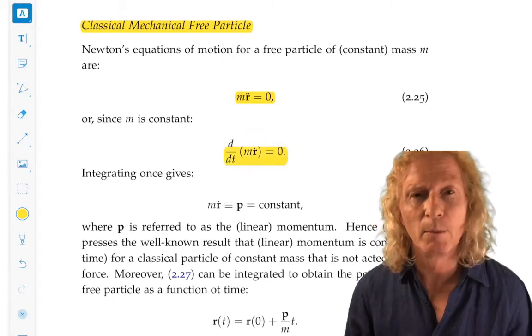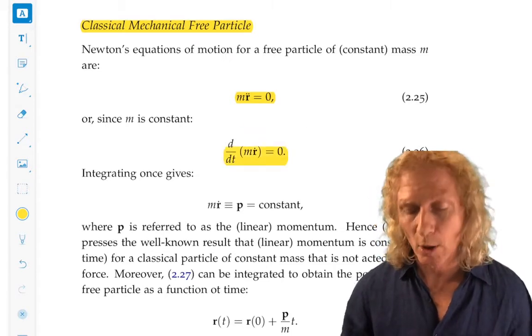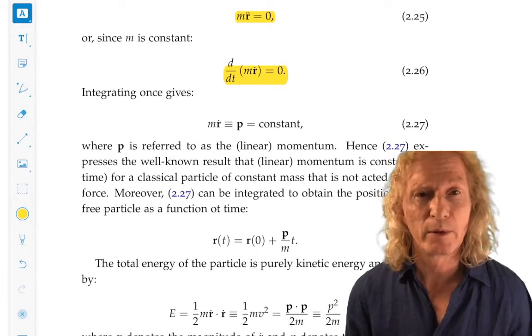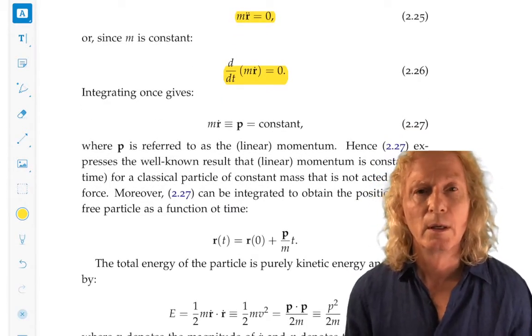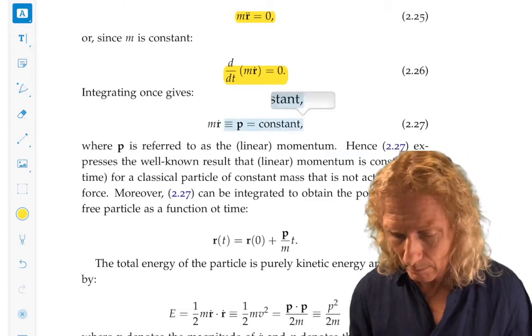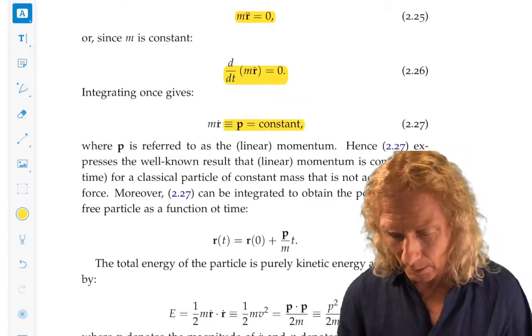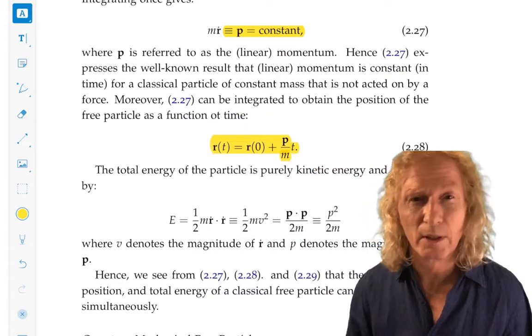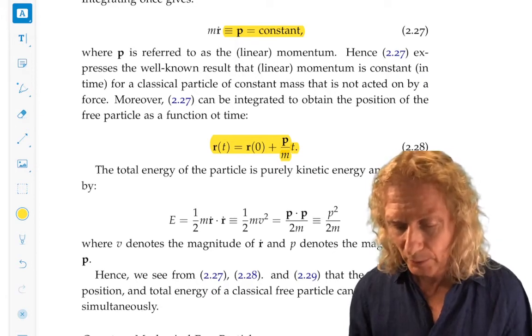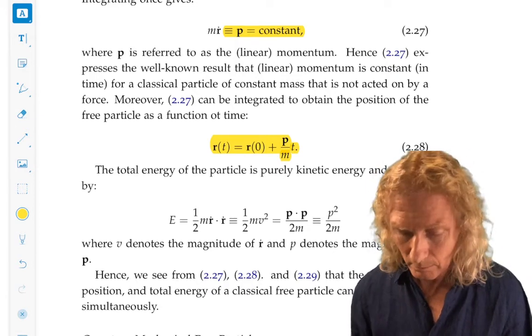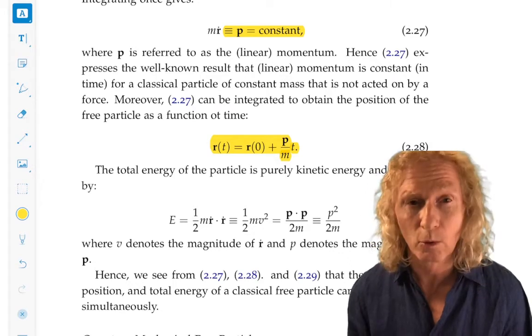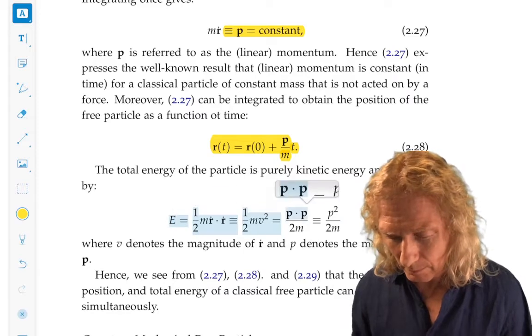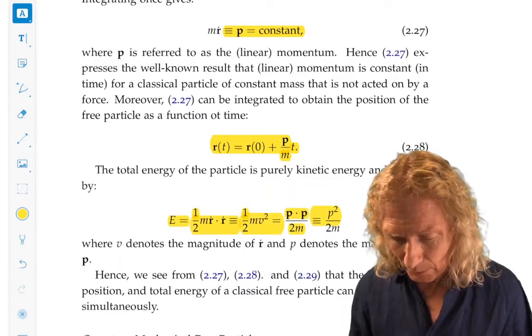We see that that's the same as d by dt of MR dot. R is a position. And that is a manifestation of conservation of momentum. We can integrate that again, and we see that we have the position as a function of time in terms of the initial position plus P over M times T. We can also write down the total energy. There's no potential energy, so it's just kinetic energy.